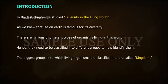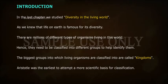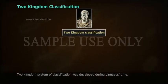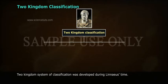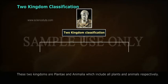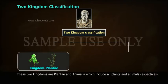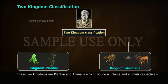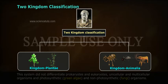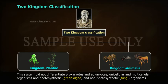Aristotle was the earliest to attempt a scientific basis for classification. The Two Kingdom system of classification was developed during Linnaeus' time. These two kingdoms are Plantae and Animalia, which include all plants and animals respectively.